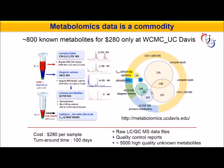Users and clients can get raw LC-GCMS data files plus quality control reports plus 5,000 high-quality unknown metabolites. These are high-quality unknowns because they are not just ions or features — they are computationally validated to be true peaks, having isotope patterns and added information for them.